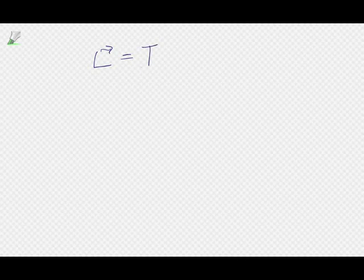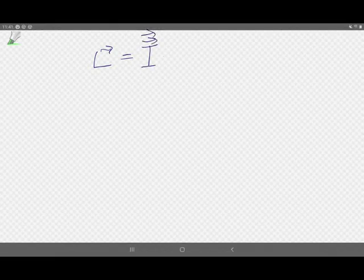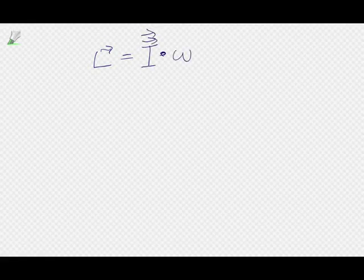Today I want to talk about a principal axis. In general, the angular momentum is equal to the moment of inertia tensor — which I write as a dot here — dot omega. That's always true if you've done your moment of inertia tensor right.